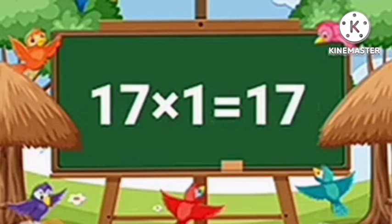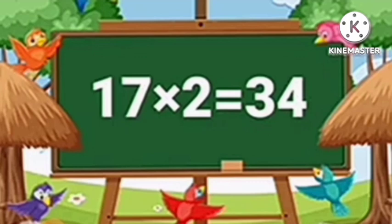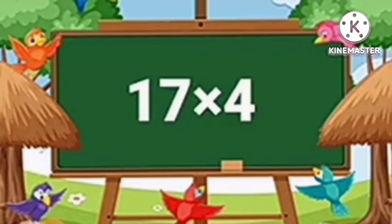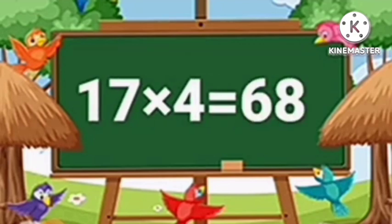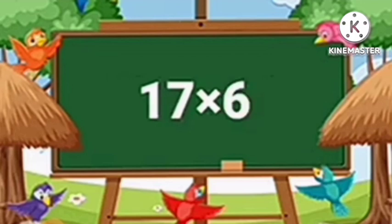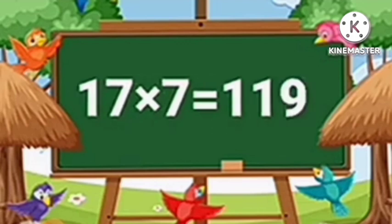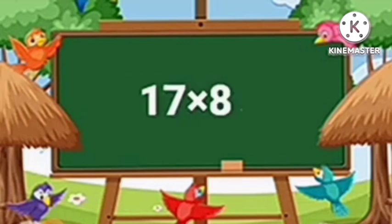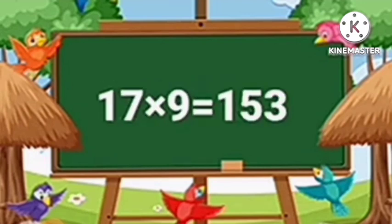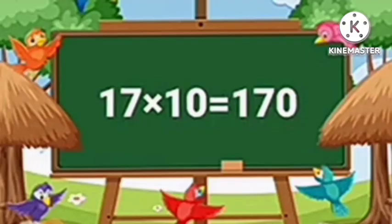Table of Seventeen. Seventeen ones are seventeen. Seventeen twos are thirty-four. Seventeen threes are fifty-one. Seventeen fours are sixty-eight. Seventeen fives are eighty-five. Seventeen sixes are one hundred two. Seventeen sevens are one hundred nineteen. Seventeen eights are one hundred thirty-six. Seventeen nines are one hundred fifty-three. Seventeen tens are one hundred seventy.